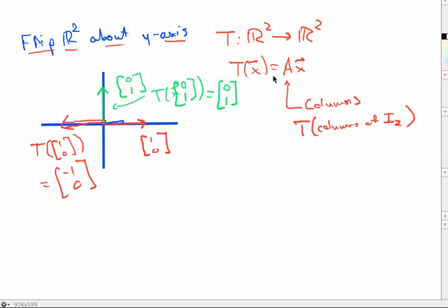So what is the matrix that I would multiply by to implement this transformation? Well, the standard matrix, I'm calling this A, would be 2 by 2. And the first column would be the transformation of 1, 0, which would be negative 1, 0. And the second column would be the transformation of 0, 1, which is just 0, 1. And that's my matrix.